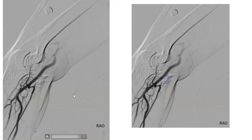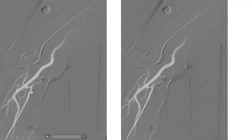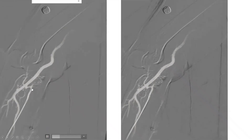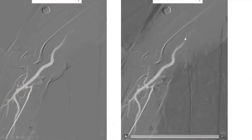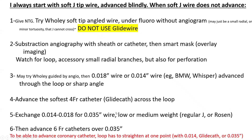In cases where you have a loop, trying to advance a 0.035 inch wire generally doesn't work. You need to use a 0.014 to 0.018 inch wire and a 4 French angled glide catheter. You advance that into the loop and cross it — here you can see an 0.014 inch Whisper wire crossing the loop. Over that wire, you advance a flimsy 4 French glide catheter that can track over a 0.014 or 0.018 inch wire. After that, if the loop gets straightened, exchange the 0.014 inch wire for a more supportive 0.035 inch wire such as a J wire or Rosen wire. Then over that, you can advance your 6 French gear. Those are the steps.